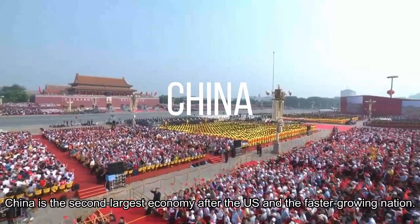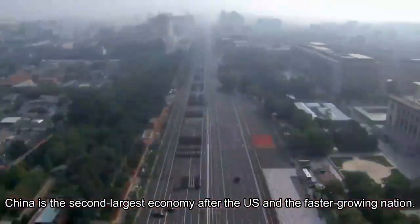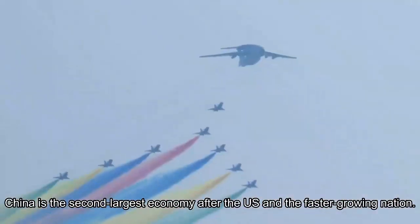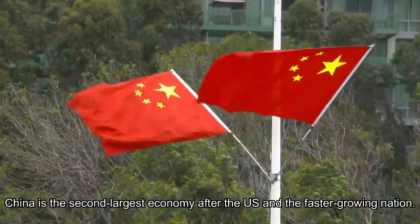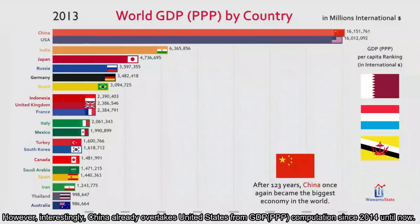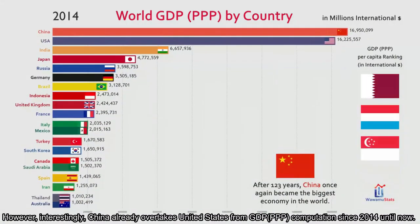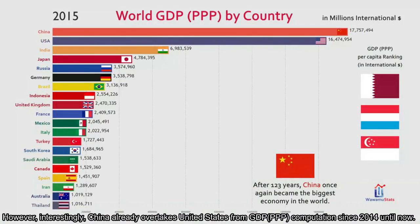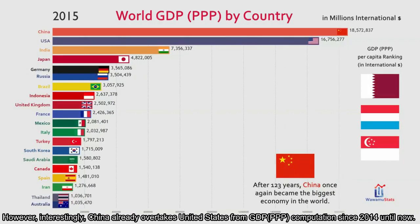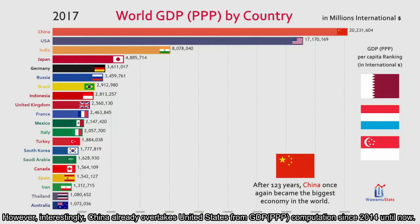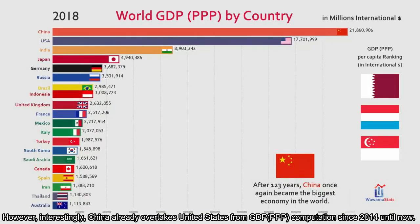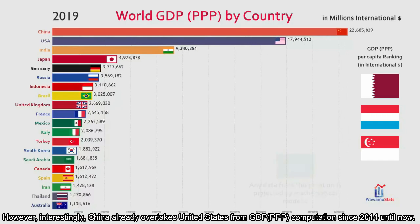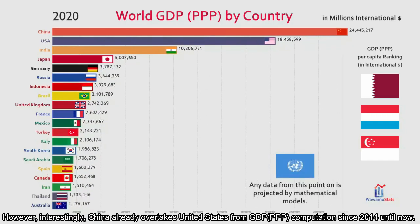Next is China. China is the second largest economy after the United States and the fastest growing nation. However, interestingly, China already overtook the United States in GDP PPP comparison since 2014 until now.